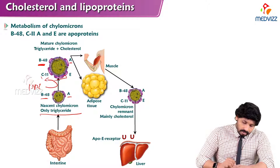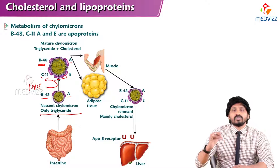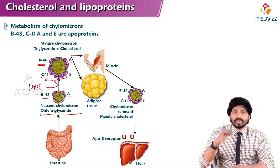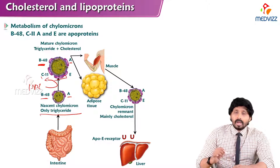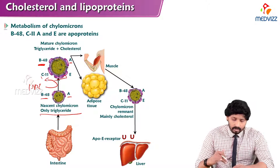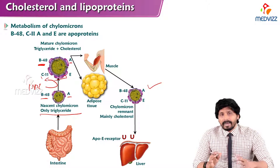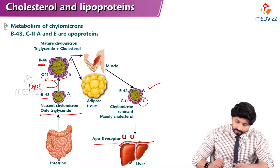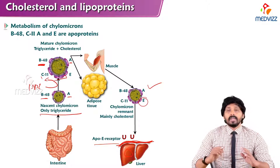Once this is the matured chylomicron: the nascent chylomicron is short of ApoC2 and ApoE, while the matured chylomicron contains all four proteins — B48, A, C2, and E. Once it reaches extrahepatic tissues like skeletal muscles, adipose tissue, and cardiac muscles, it releases triglyceride content as free fatty acids. Once the triglyceride level decreases, the size decreases, and it is known as remnant chylomicron. Because of the presence of ApoE and the ApoE receptors on the liver surface, it is taken up inside and then degraded.